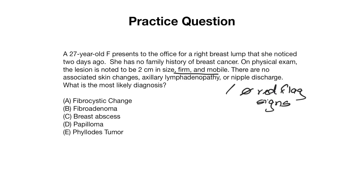The answer is fibroadenoma, because that is the most common benign neoplasm in the breast and here we are only presented with benign features. Fibrocystic changes usually present with bilateral features and no discrete mass — more of a lumpy, nodular breast tissue. Breast abscesses usually have tenderness and fever. Papilloma typically presents with bloody nipple discharge. A phylloides tumor is usually a very large mass often seen in post-menopausal women.